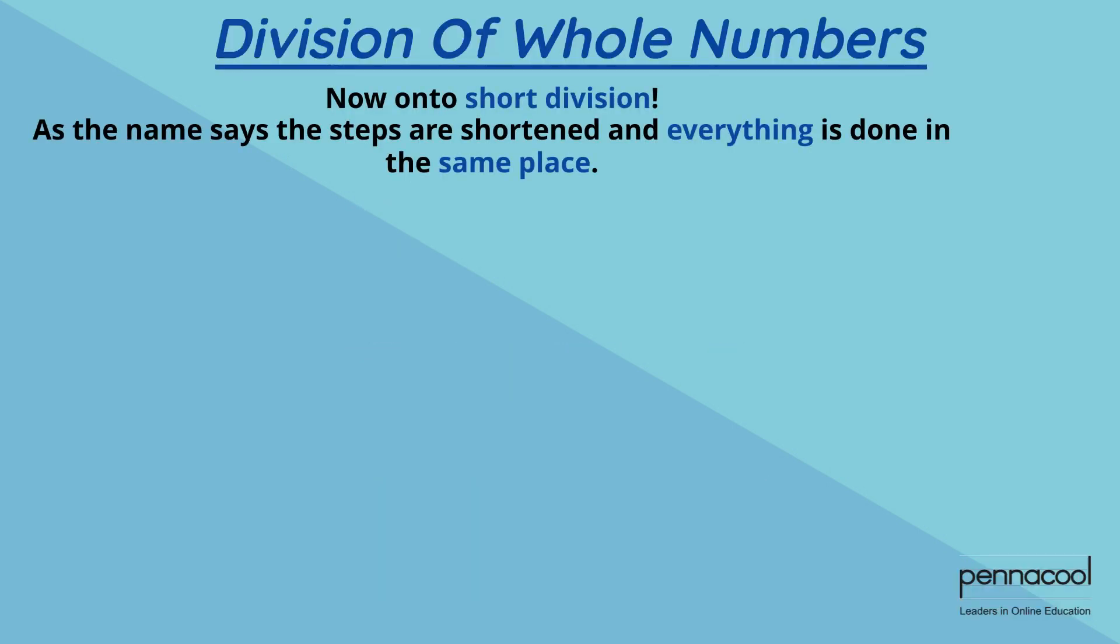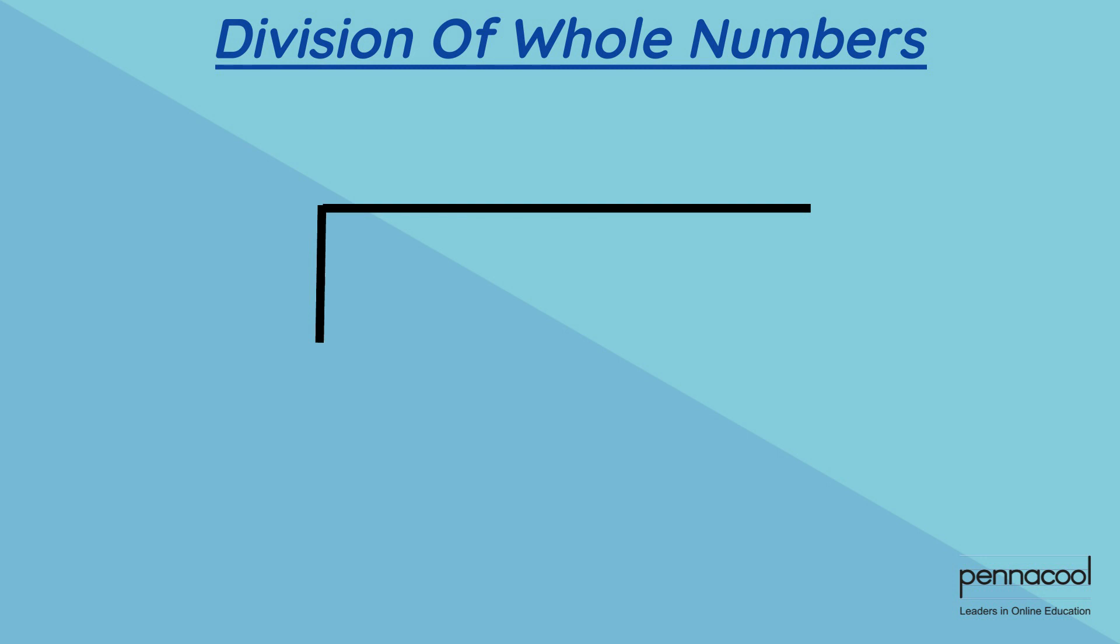Now onto short division. As the name says, the steps are shortened, but everything is done in the same place. Example time, 186 divided by 6.